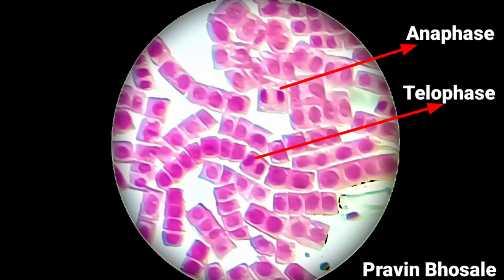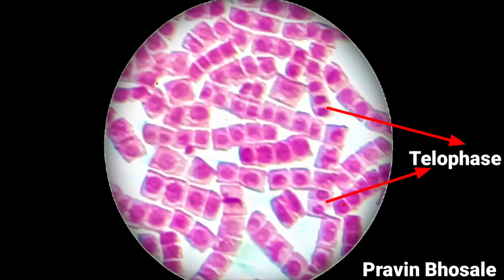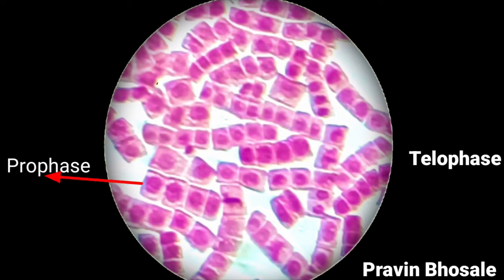Here you will see telophase — there are two nuclei in the cell. Again you can see a telophase: two nuclei are there in the cell. This is prophase. This is telophase.